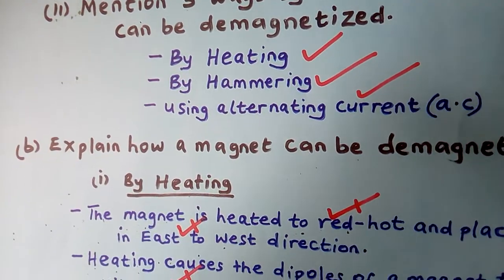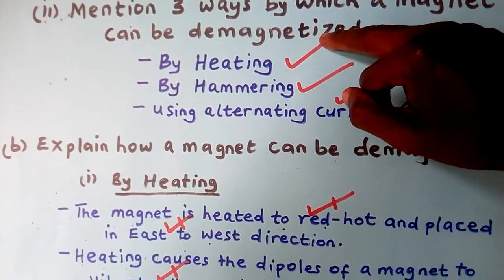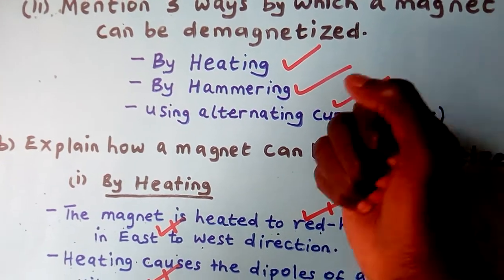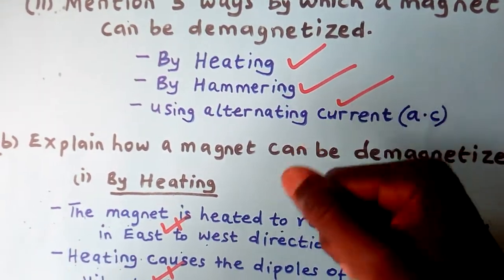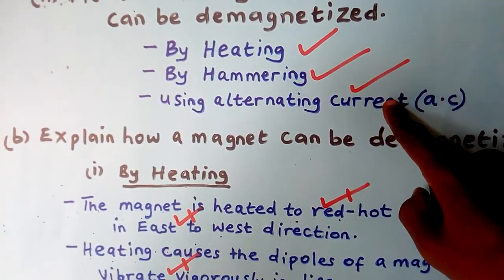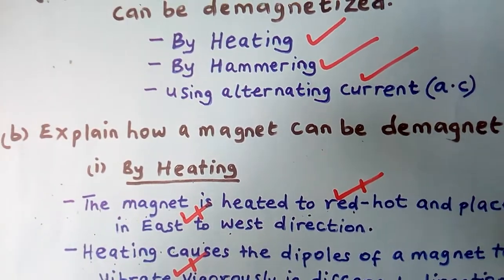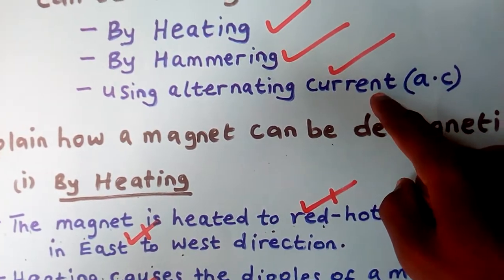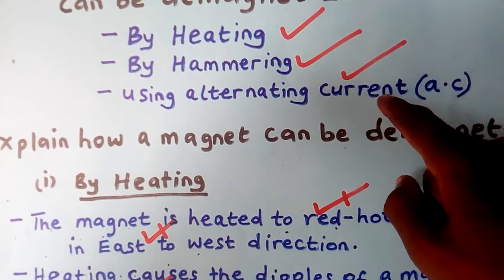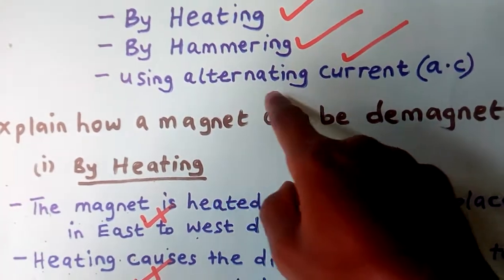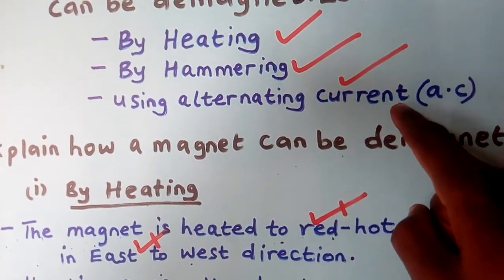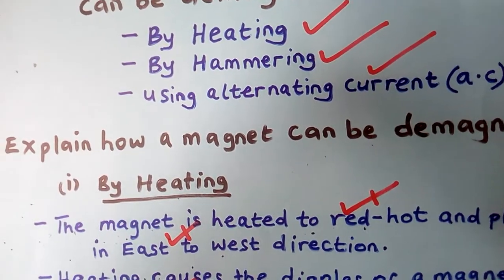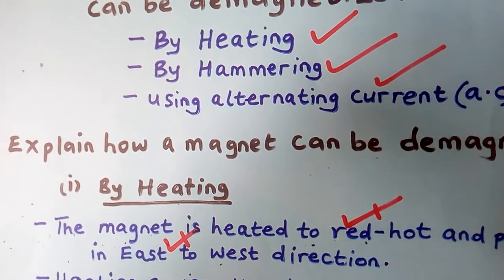The first way is by heating. The second is by hammering — you keep on hammering. Then there is also using current, that is alternating current. Be careful with the current: when you use direct current, it is used for magnetizing, but alternating current is used for demagnetizing. So these are the three ways if you want a magnet to lose its magnetism. Let us look at them one by one.